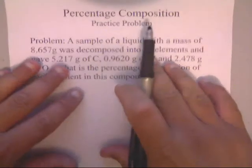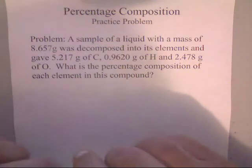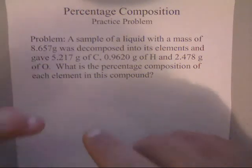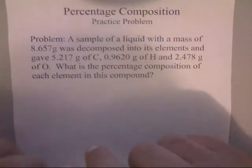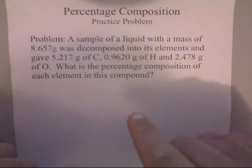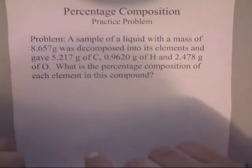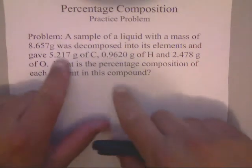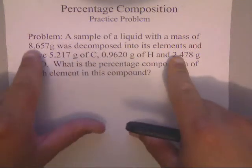Let's read the scenario. A sample of liquid with a mass of 8.657 grams was decomposed—broken down—into its elements. They gave 5.217 grams of carbon, 0.9620 grams of hydrogen, and 2.478 grams of oxygen. They asked us what is the percent composition of each element in this compound.